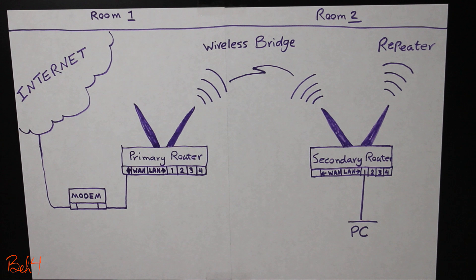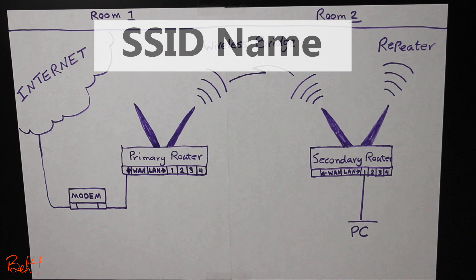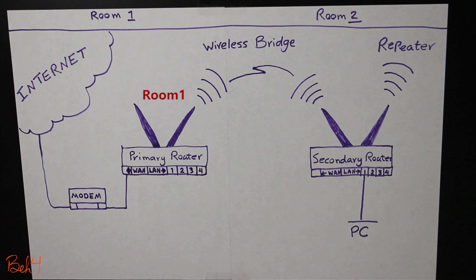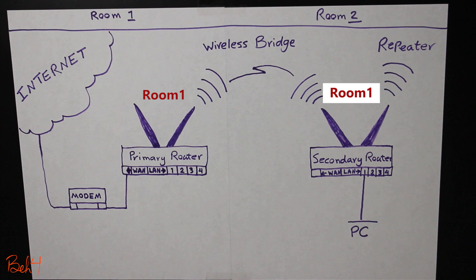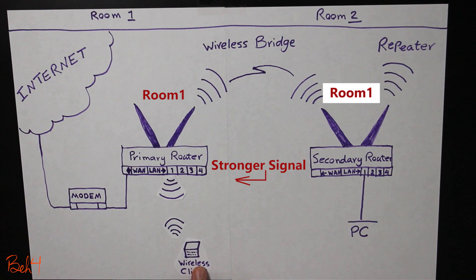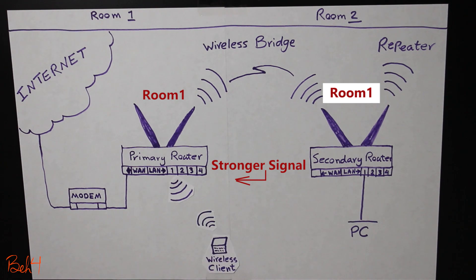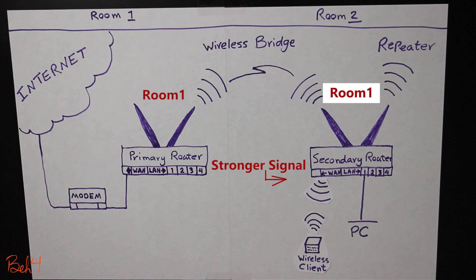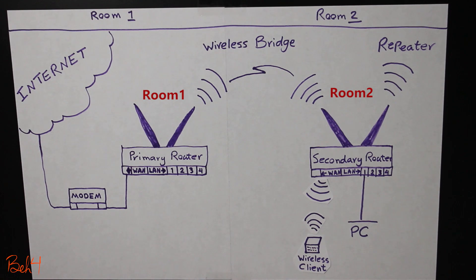The second thing I wanted to talk about is the SSID name. In that video, the primary SSID was room 1 and I set the repeater's SSID to room 2. I just wanted to point out that it is possible to have the same SSID name and also the same password for the secondary router. This can even make the roaming process easier — when the wireless client moves away from the primary router and gets closer to the secondary router, it can automatically switch since they have the same SSID name and password. Whether to use the same SSID name or a different one depends on your network design and requirements.